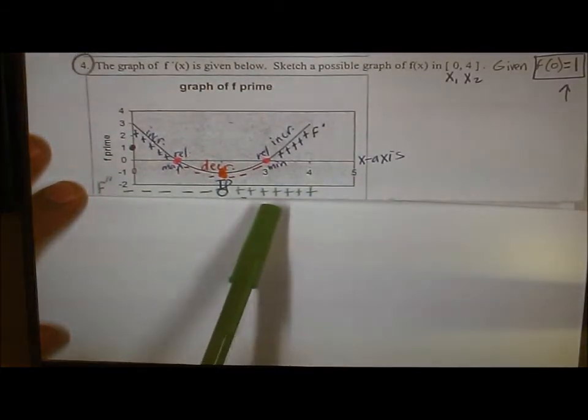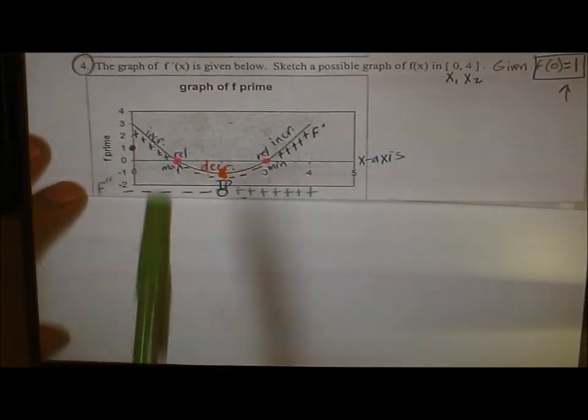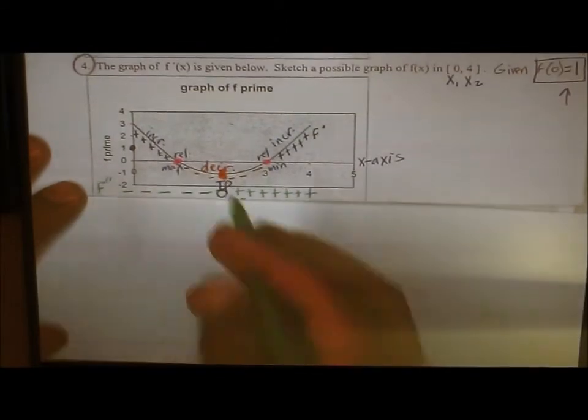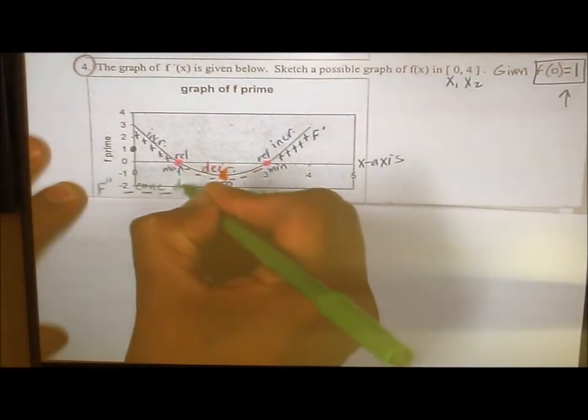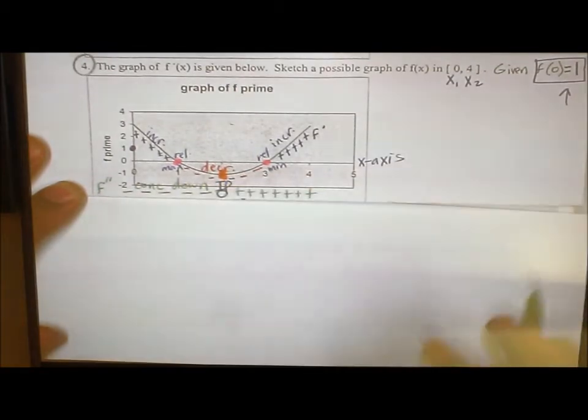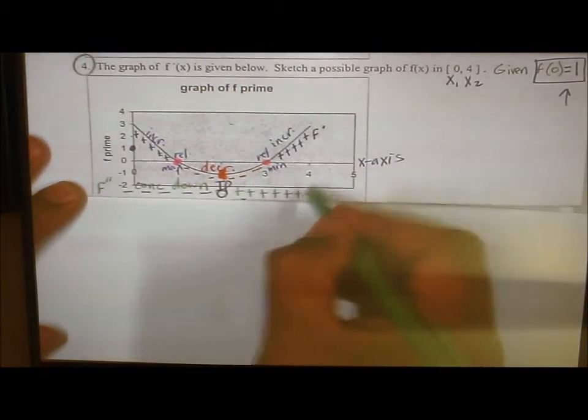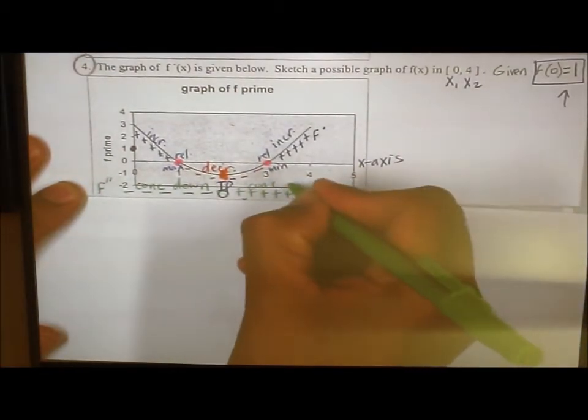And now you have information about increase, decrease, and concavity. For example, from 0 to 2, you now know that you're concave what? And from 2 to 4, you know that you're concave up.